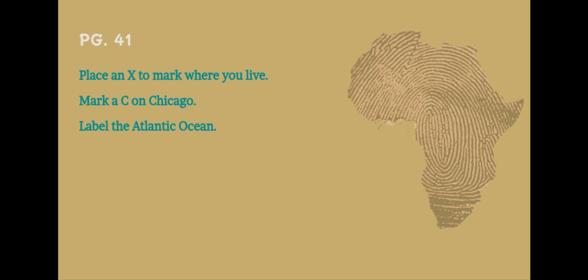Number one: who led the dig in Niger, Africa? Number two: why did Dr. Sereno need help from the Taurig tribe? Number three: how did the dig team protect the fossils? Number four: how did the dig team load the bones onto trucks? Number five: how did the scientists clean the bones? Number six: why did Dr. Sereno's team make bones? Number seven: what did the team create to help build the skeleton? Number eight: how did they make the casts look like real fossils?